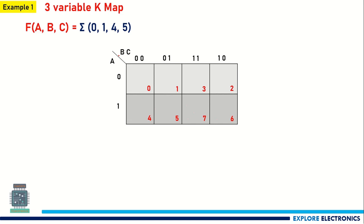Now we need to look at what inputs are given: 0, 1, 4, and 5. So I need to fill logic 1 to these cells. Cells 0, 1, 4, and 5 will be filled with 1s and the remaining cells with 0s.